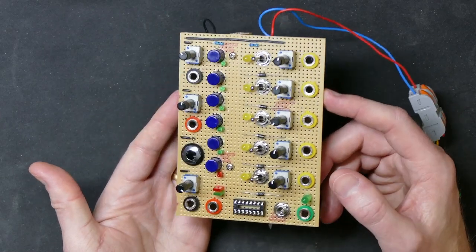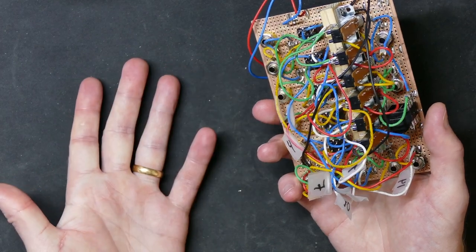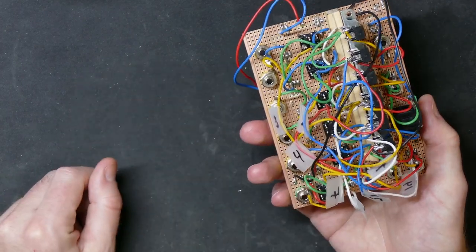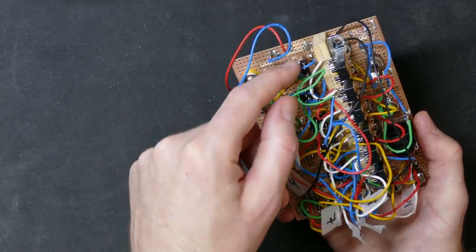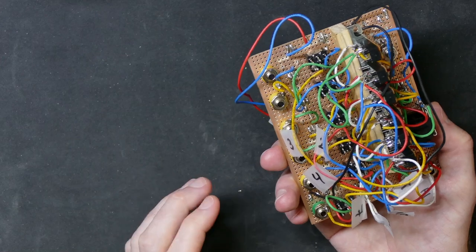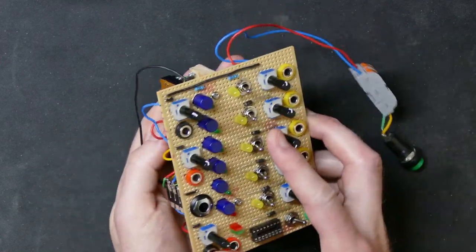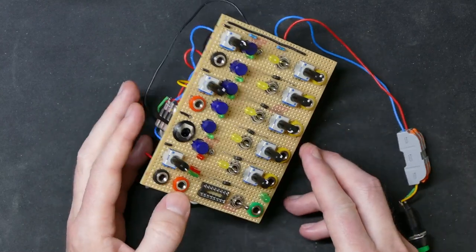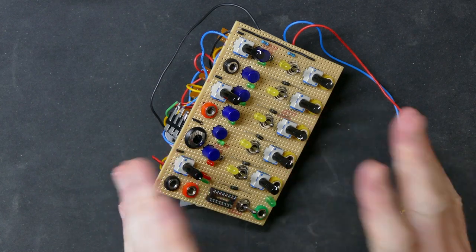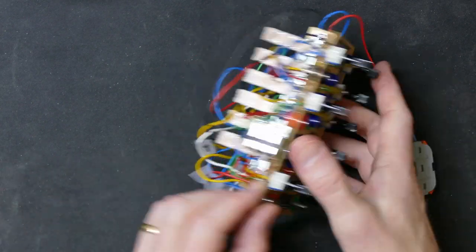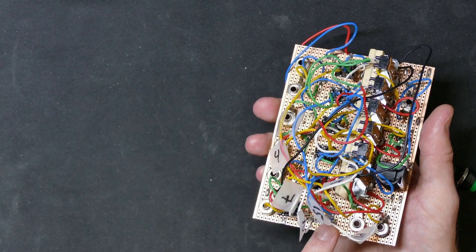So there you go, that is the status of my current project to make a 4017 sequencer looking absolutely lovely now with all these cables, including some charred ones here because I've been soldering in between some cables, just pushing them aside and soldering in between. Yeah, there we have it. That is where I'm at at the moment.